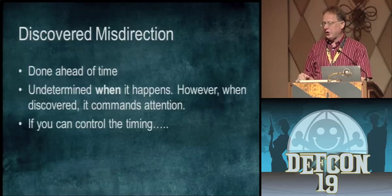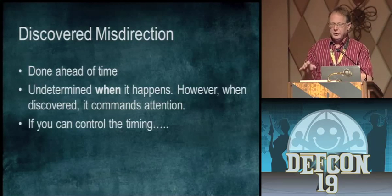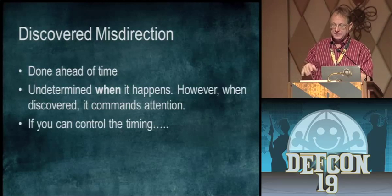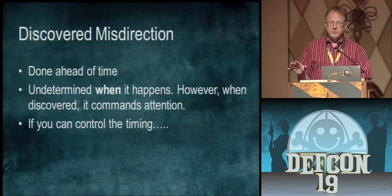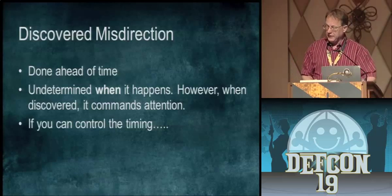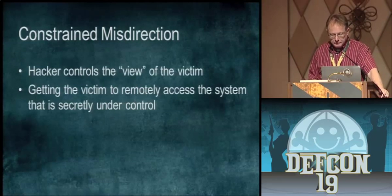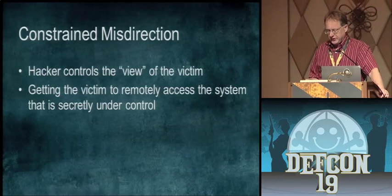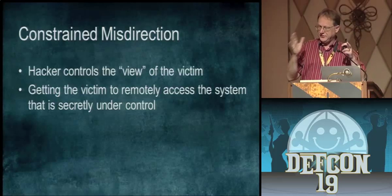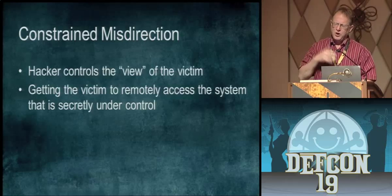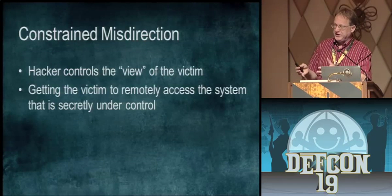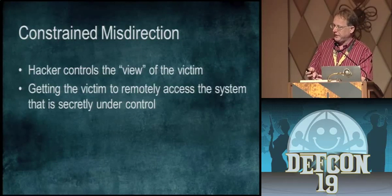There's another kind, a little subtler — called discovered misdirection. You don't tell them about it; you wait for them to discover it on their own. It's sitting there ahead of time waiting to be found. You have to control the timing because it's not always under your control. There's also constrained misdirection — Penn and Teller do something where they throw an object over someone's head and he doesn't know what happened, but everyone else does, because they're controlling what he sees. If you can control the environment — get an administrator to have remote access into a machine you control — they may not see what they think they're seeing.